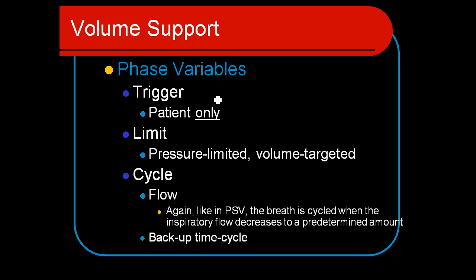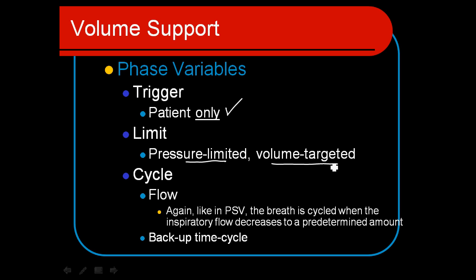The trigger in volume support can be patient-only — either flow or pressure triggered. If the patient goes apneic, the ventilator doesn't do anything. It's pressure limited, just like pressure support, but now we've added a volume target. The pressure support level is increased or decreased depending on the inspiratory effort of the patient. It's inverse: if the patient takes a large breath and does a lot of work, the pressure support level decreases; if the patient does minimal work and just triggers the breath, the pressure support level increases.